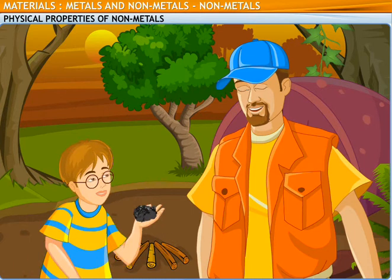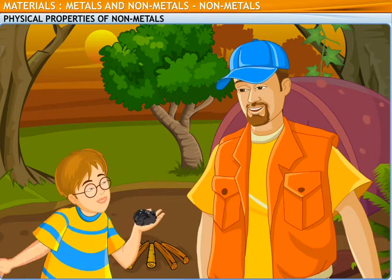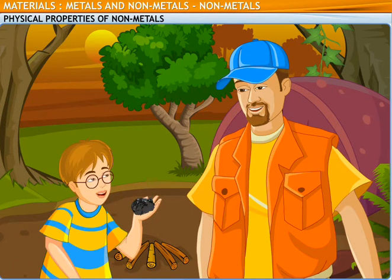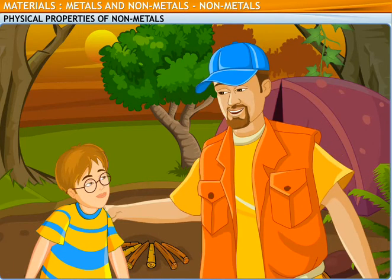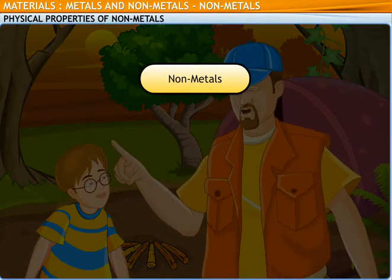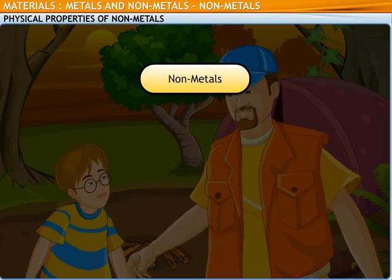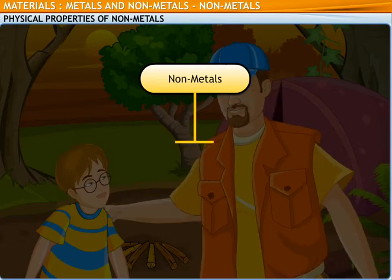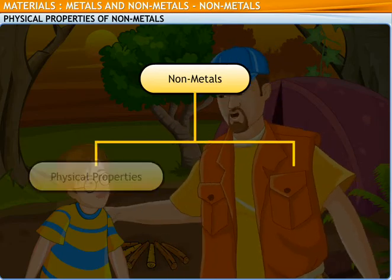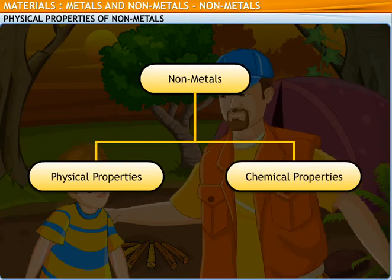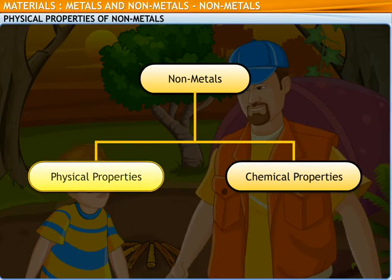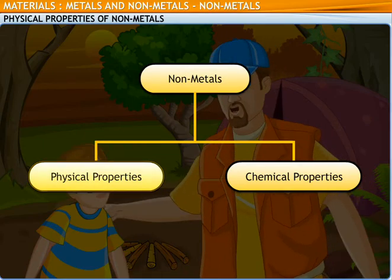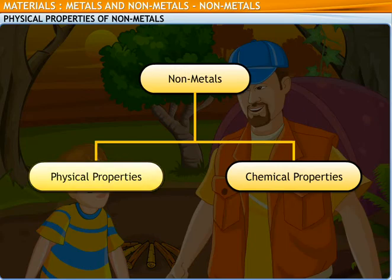How does one identify non-metals? Do they have any distinguishing characteristics? Yes, like metals, non-metals also have typical properties, which may be categorized as physical and chemical properties. The physical properties are more readily observable in our daily life.